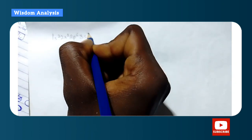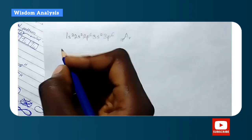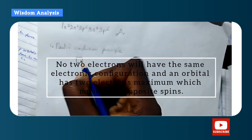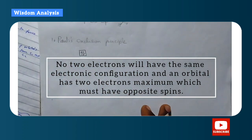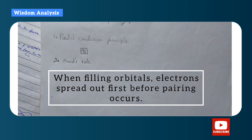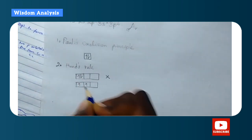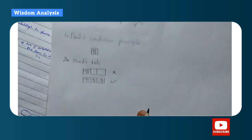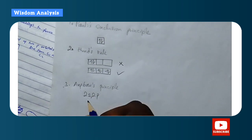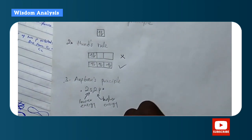Writing electronic configurations follows three major principles. First, the Pauli Exclusion Principle: no two electrons have the same configuration; an orbital can only contain two electrons with opposite spins. Second, Hund's Rule: when filling orbitals, electrons spread out first before pairing occurs. Third, the Aufbau Principle: lower energy subshells are filled before higher ones — so 2s is filled before 2p.